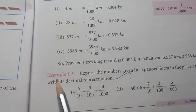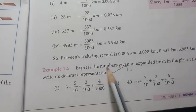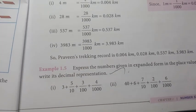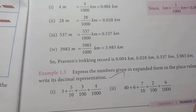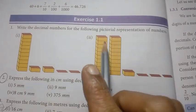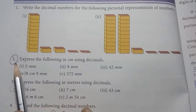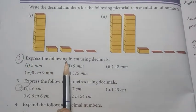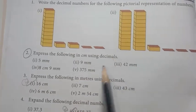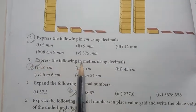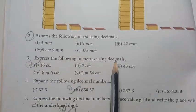Next, Example 1.5: express the numbers given in expanded form in the place value grid — decimal representation is important. Exercise 1.1, second one: express the following in centimetres using decimals, and express the following in metres using decimals.